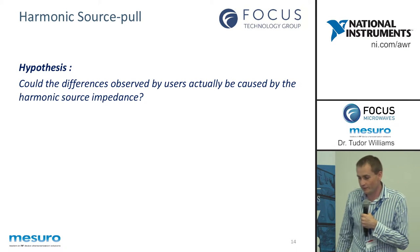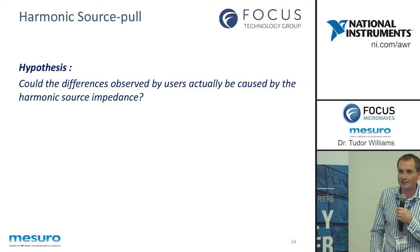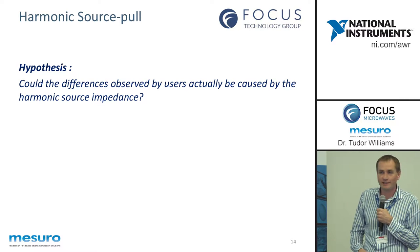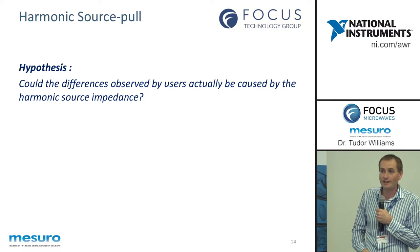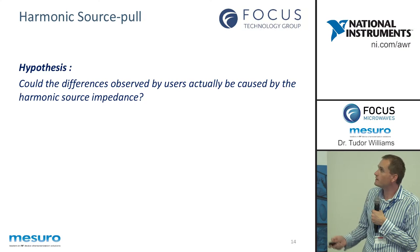So I was going to move on then to look at harmonics, because my assumption is that when people are seeing these differences in performance when they're doing source pull, what they're actually seeing is the tuner randomizing the harmonic impedances and then changing the performance of the transistor. Now, obviously, that's not what you want, really, because when you design the circuit, you don't know what's happening there — we haven't done the same thing in the circuit, and you won't actually get the performance you expect.